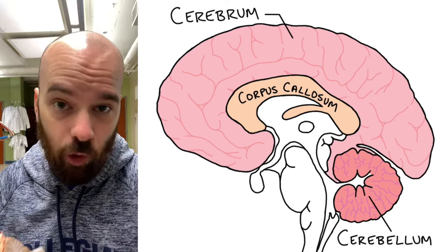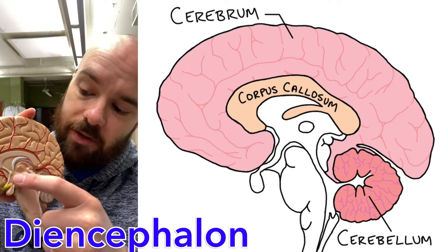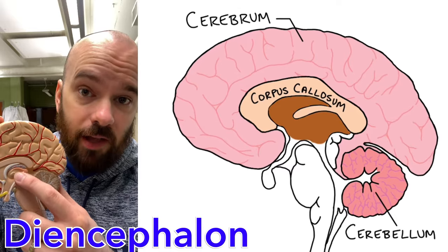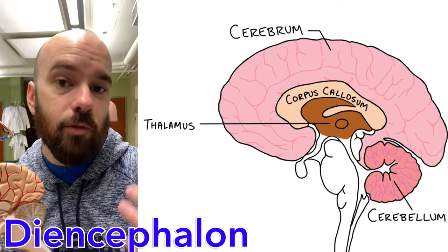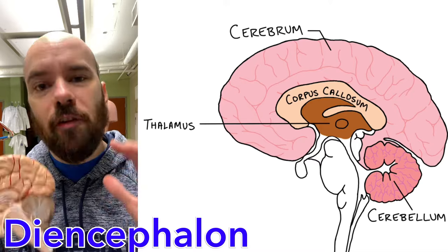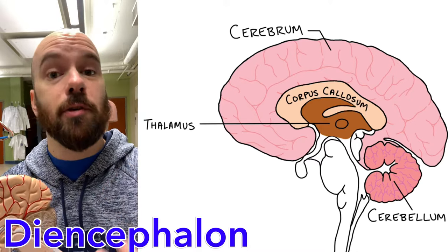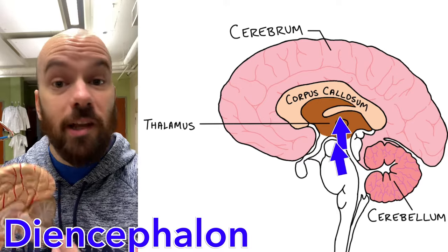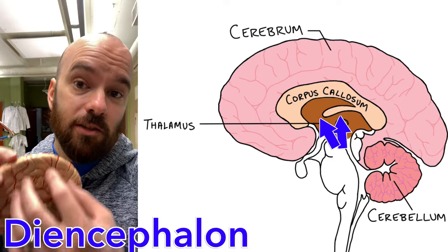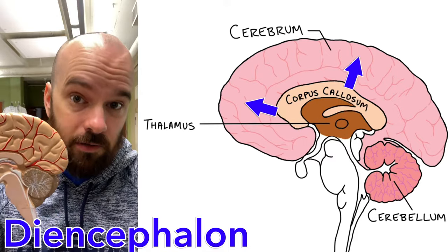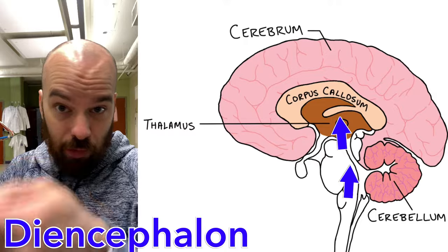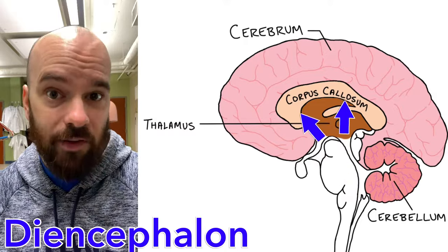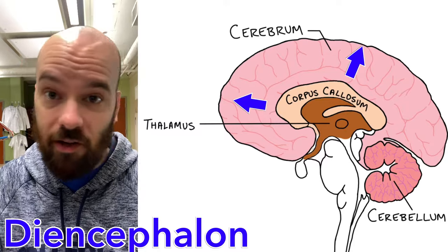Next, we're going to talk about four parts of the diencephalon, which include the thalamus, hypothalamus, pituitary, and pineal gland. The thalamus, just inferior to the corpus callosum, is sort of a relay station between the spinal cord and the other parts of the brain. It's full of synapses — connections between neurons — where neurons from the spinal cord bring information up into the thalamus, which then connects to neurons in the thalamus to send those signals to whatever part of the brain they need to go to. If you've ever seen an old movie where an operator directs calls to where they need to go, that's a really good metaphor for the thalamus.